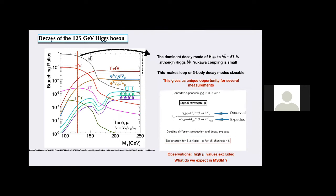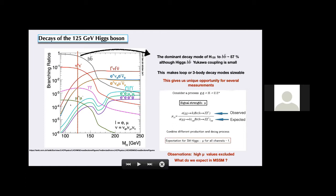This is the branching plot for the Standard Model Higgs boson as a function of Higgs mass. At 125 GeV, the H→bb̄ decay mode is the most dominant with branching around 57%. Although the bb̄ coupling is very small — it's m_b/v — the total decay width is really small. Because of this, loop processes or three-body and four-body decay modes have sizable, non-negligible branching ratios, giving us unique opportunities for several measurements.